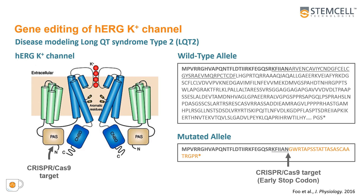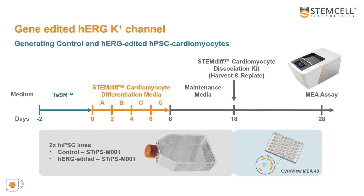To disrupt the HERG potassium current, we used the CRISPR-Cas9 gene editing system to target the PAS domain, which is located in the N-terminus of the HERG potassium channel. We created an IPS line that carried a 4-nucleotide deletion in the PAS domain, which resulted in an early stop codon. We next generated cardiomyocytes using our control and HERG-edited isogenic HPSC lines using our STEMdiff cardiomyocyte differentiation kit.